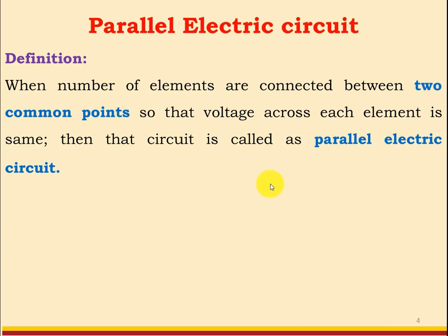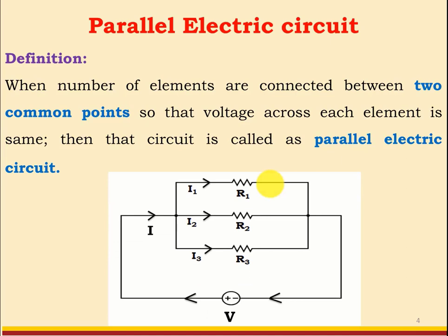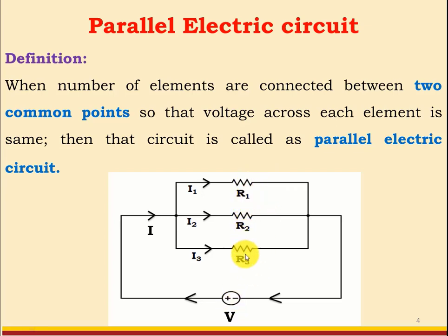Let us consider one example. Here, three resistors R1, R2, R3 are connected between two common points, so resistors R1, R2, R3 are said to be connected in parallel. We are connecting a DC voltage source V across this parallel combination. I have shown three resistors in parallel, but in general we can have two or more than two elements in parallel.